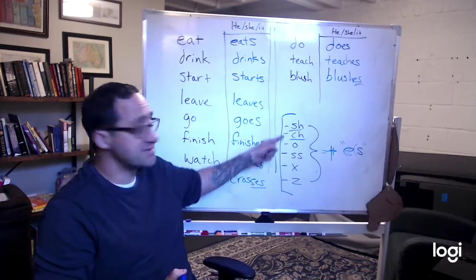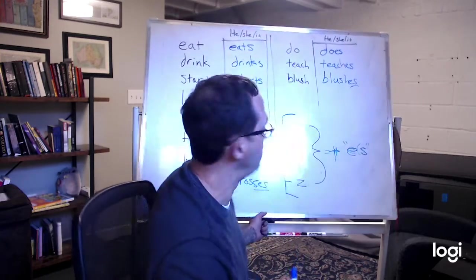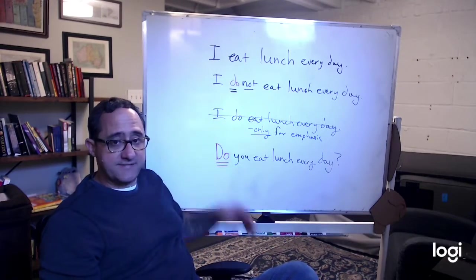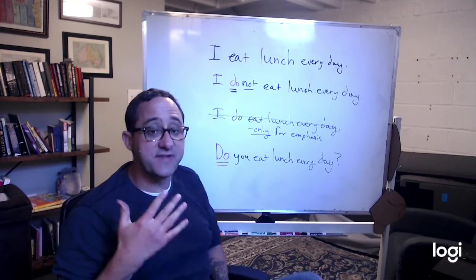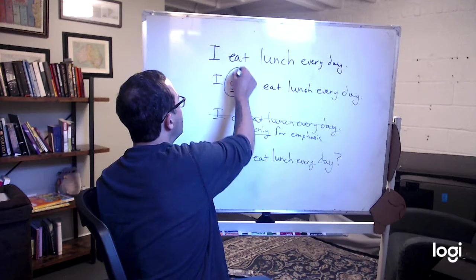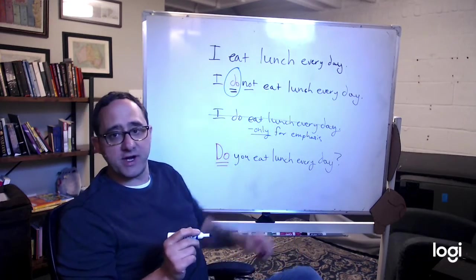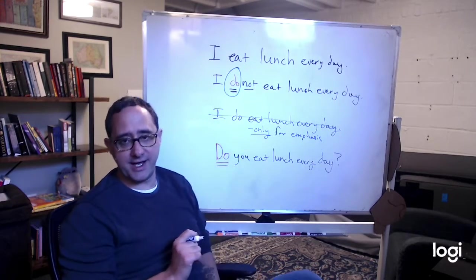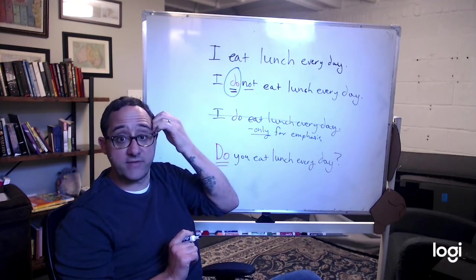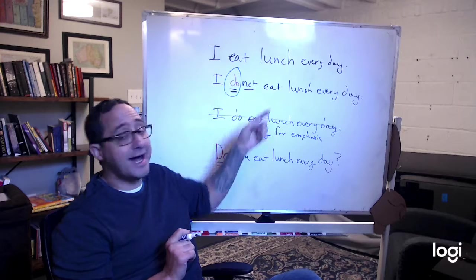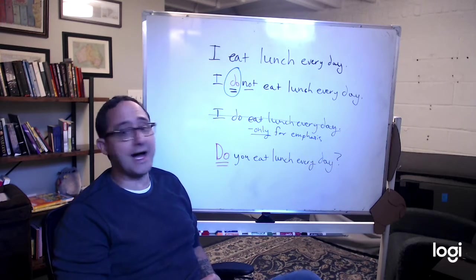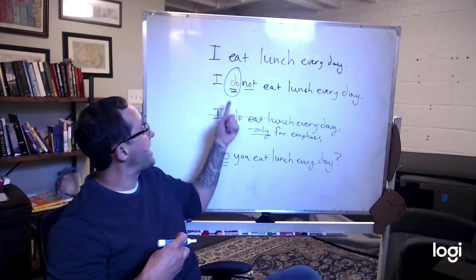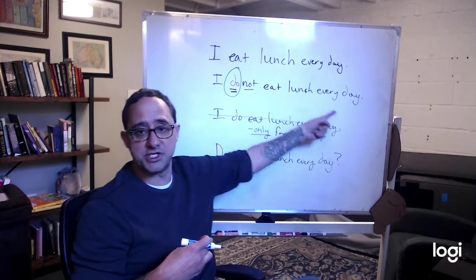Okay, so I hope this helps. Watch these and try it out yourself. There's one more thing I want to cover. When we make it a negative statement, we do something that English is very strange for. We add a do. I eat lunch every day. Alex, do you eat lunch every day? What if I don't eat lunch every day? I do not eat lunch every day. I add this do to not. I don't say, I eat not lunch every day. People will understand what you mean, but that's not how we speak. We add a do here. I do not eat lunch every day.